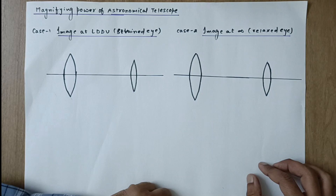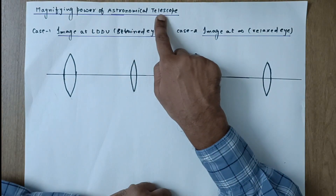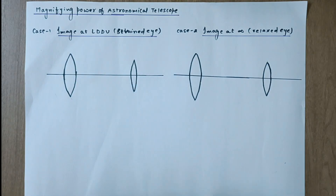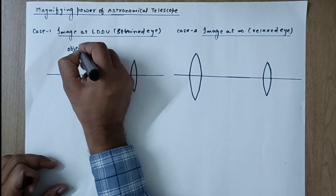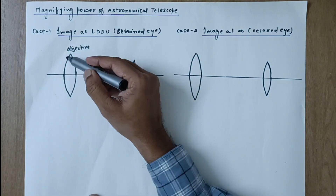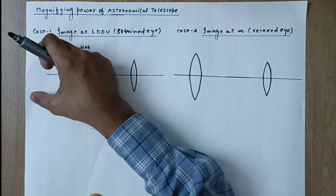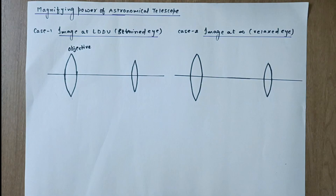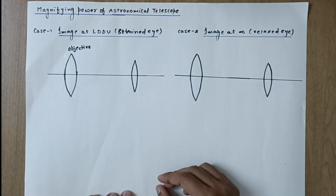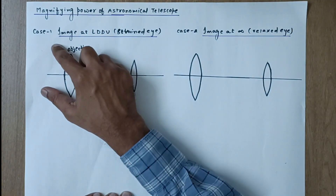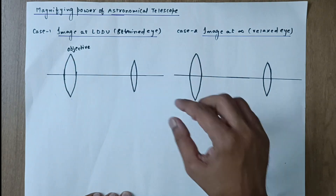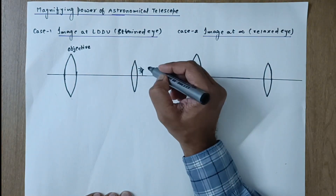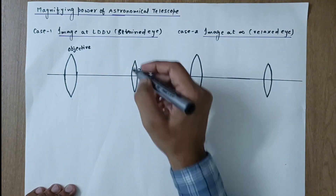In this video we are going to discuss the magnifying power of an astronomical telescope, which makes use of two convex lenses. The first one, towards the object, is known as the objective. The objective lens has a very large aperture — the diameter of the lens is kept very large so that it can collect more light and form a brighter image. The lens near the human eye is known as the eyepiece.